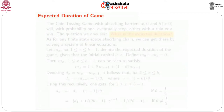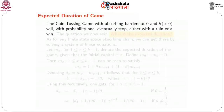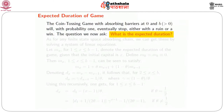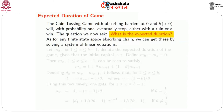We now turn attention to another quantity of interest: the expected duration of the game. The coin tossing game with absorbing barriers at 0 and b will with probability 1 eventually stop, either with a win or a ruin. The question is: what is the expected duration? How long is the game expected to run before eventually hitting a win or a ruin? As for any finite state space absorbing Markov chain, we solve a system of linear equations.